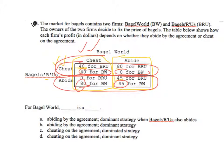So we've got this classic prisoner's dilemma. Both have dominant strategies to cheat. In a single-shot game, that is where they're not going to play it next period, the Nash equilibrium is where they both cheat. So for Bagel World, cheating on the agreement is a dominant strategy.